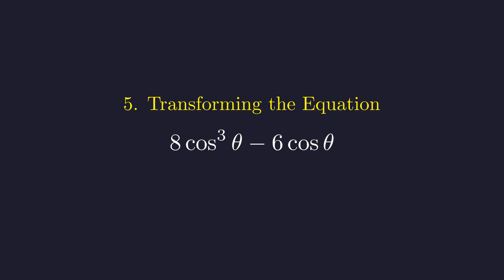I can factor out a 2 from both terms. And look what's inside the parentheses. That's exactly the cosine triple angle formula. So the entire left side becomes 2 cosine of 3 theta.